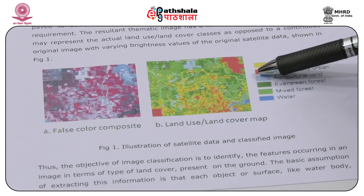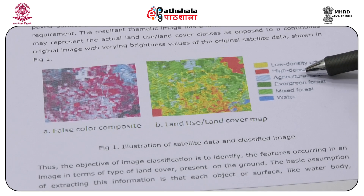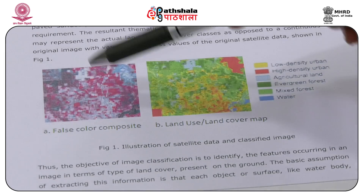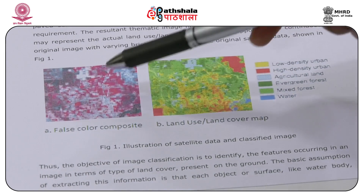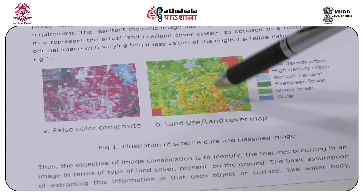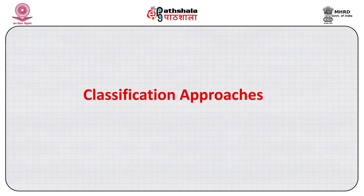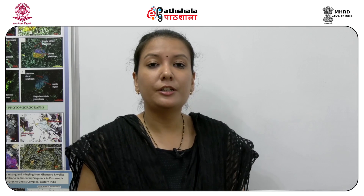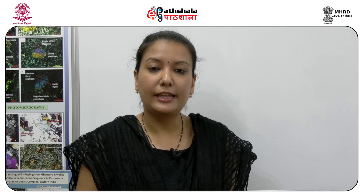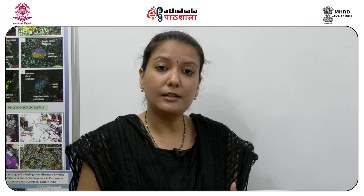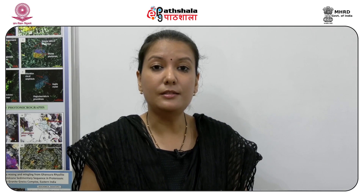This data is more useful to end users who need to assess the land use land cover map. Similarly, this same figure can be used for other purposes like water resource management, agricultural purposes, and land use change detection. The basic assumption for classifying an image is that if it's a water body, agricultural land, or any other information class, the spectral signature of each class is different.